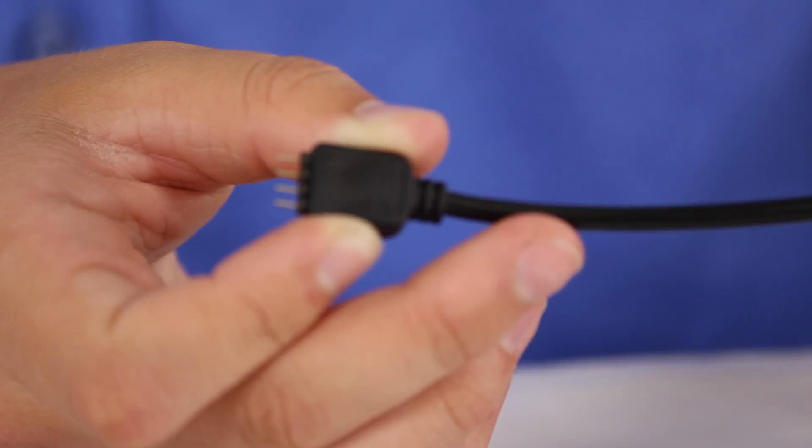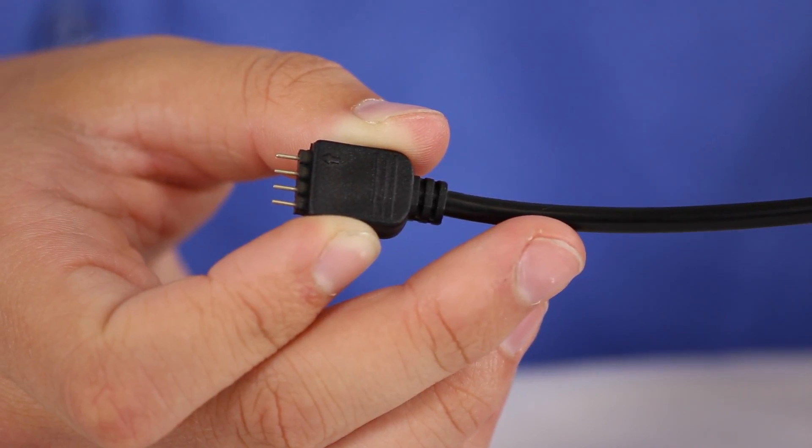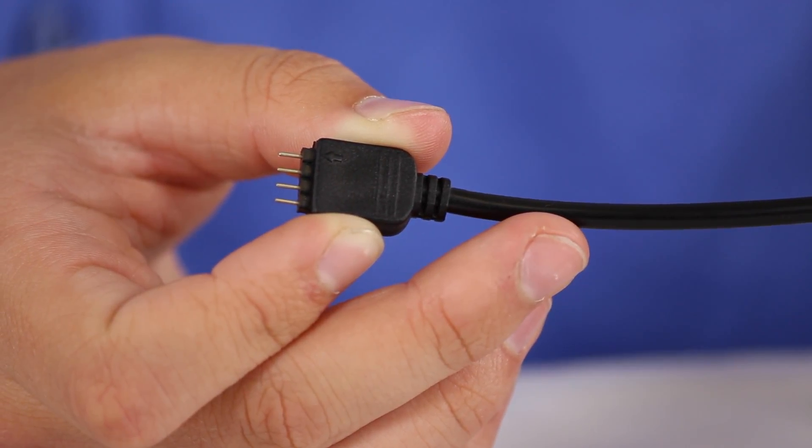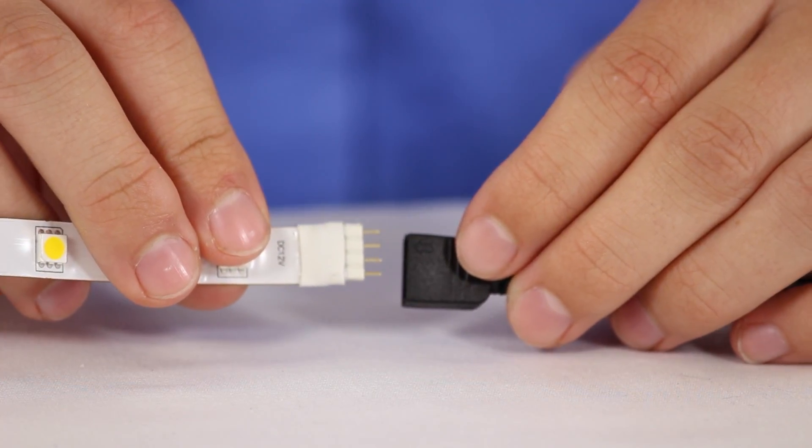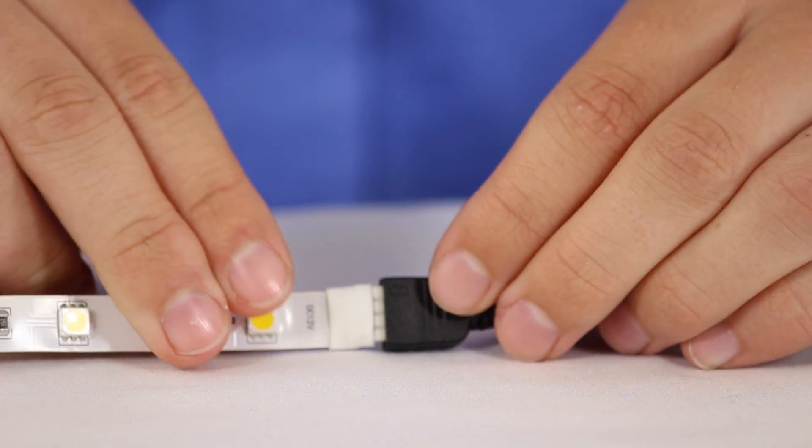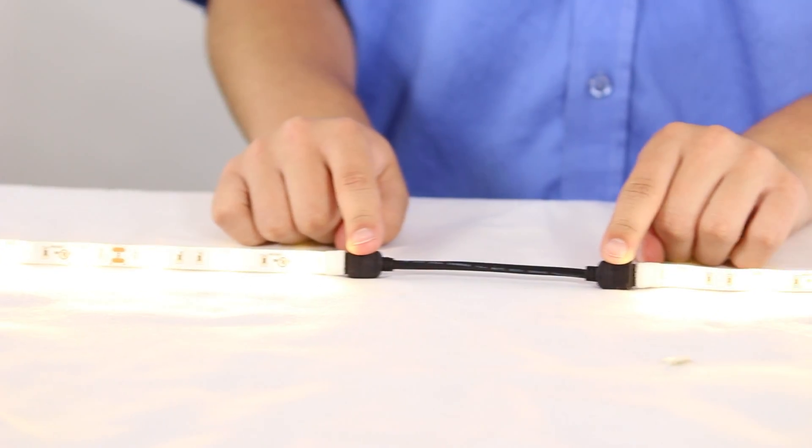You will notice a small arrow at the end of each jumper. This arrow designates the positive pin location. Line the arrow up with the positive plate on the strip and insert. Do the same on the other side and your strips are connected.